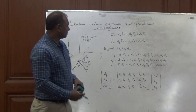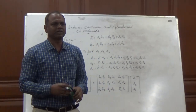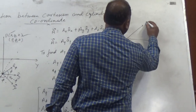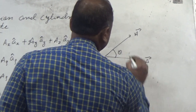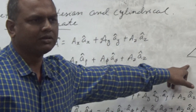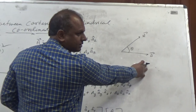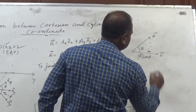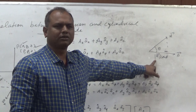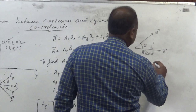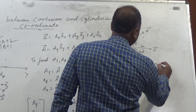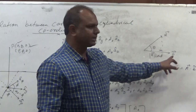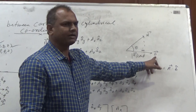For this conversion, we will use the projection formula — how we can project one vector onto another vector. If we have two vectors A and B with angle theta between them, and we want to project vector A onto vector B, we get A cos(theta), which is the scalar projection. This can be written as A dot with unit vector B.